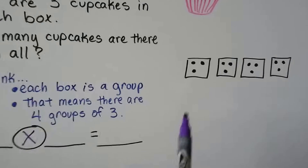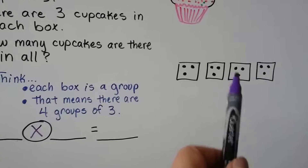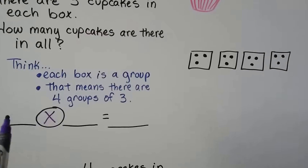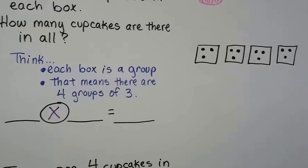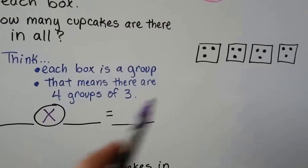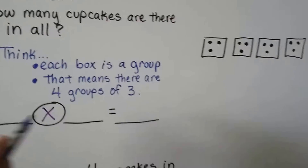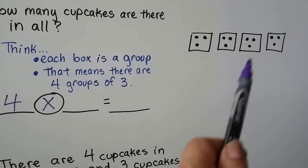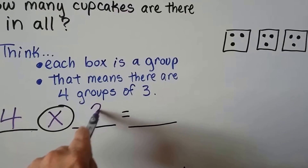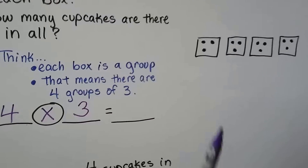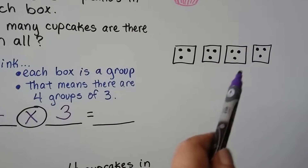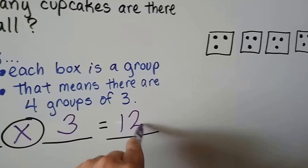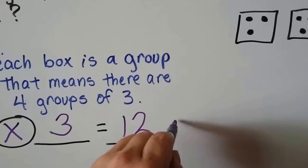We could use addition and do three plus three plus three plus three, but we have two lines here, so it's going to be multiplication. How many groups do we have? Four. How many are in each group? Three. Four times three equals — counting: three, four, five, six, seven, eight, nine, ten, eleven, twelve. And we label it: twelve cupcakes.